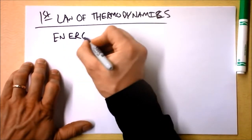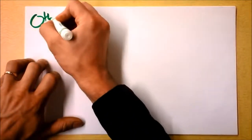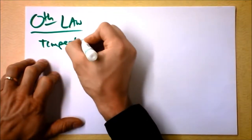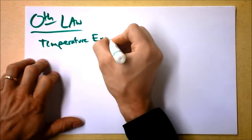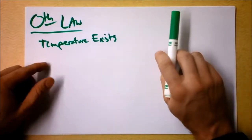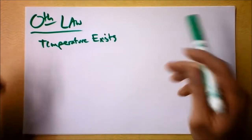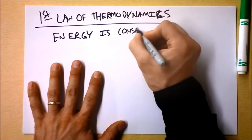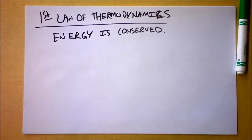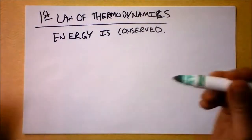There are three laws of thermodynamics: zero, one, two, and three. We're going to start with the zeroth law: temperature exists. When two objects have been in contact for a long time, they will approach the same temperature. Of course, the first law is a very specific law having to do with gases and changing state. The state of a gas is given by PV = nRT.